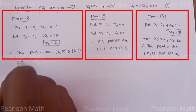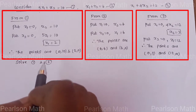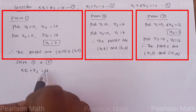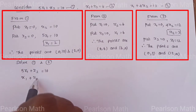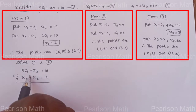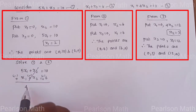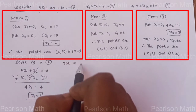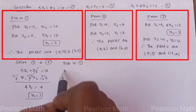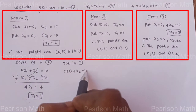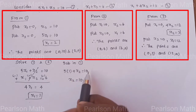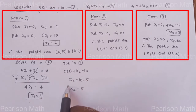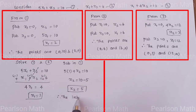Now solve equations 1 and 2 simultaneously. First equation: 5x1 plus x2 equal to 10. Second equation: x1 plus x2 equal to 6. Sign change to eliminate x2 — 5 minus 1 is 4, 10 minus 6 is 4, so x1 equal to 1. Substitute x1 equal to 1 in the first equation: 5 plus x2 equal to 10, so x2 equal to 5. Therefore, the intersection point is (1, 5).